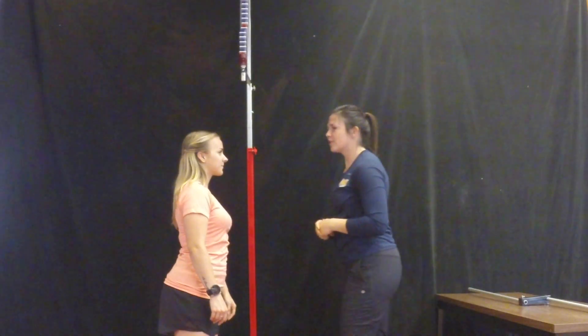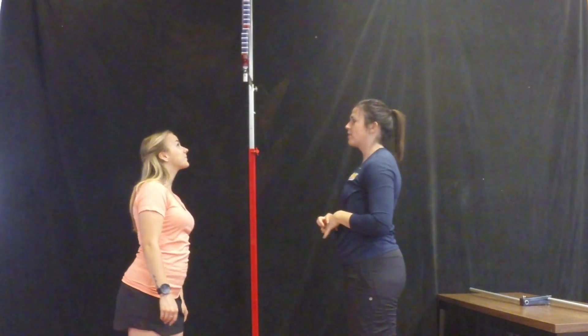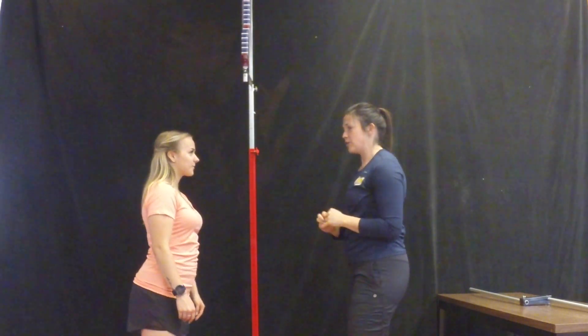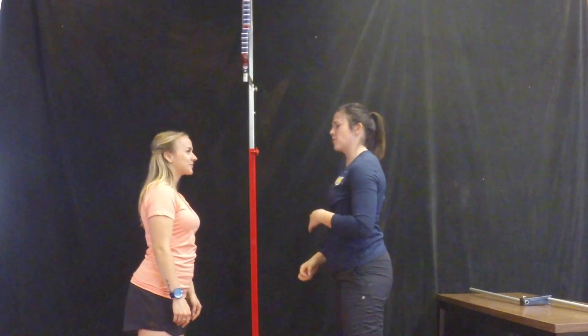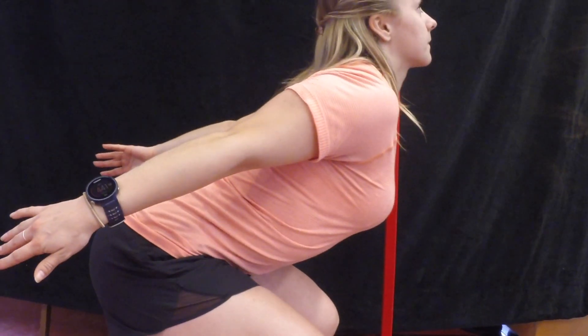Now explain that you will do 3 jump trials with 10-15 seconds of rest between each jump and that you will only take their best score. To do the jump, tell them they must bring their arms down and back as they go into a semi-crouch, but not to bend their knees past 90 degrees.